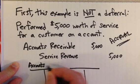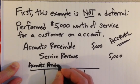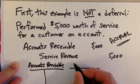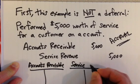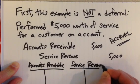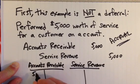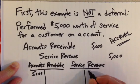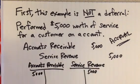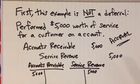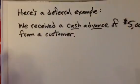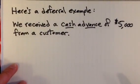And of course we can do this in T-accounts too. Here's our accounts receivable T-account and here's our service revenue T-account. To record the accrual, we debit the $5,000 to accounts receivable and credit the $5,000 to service revenue, respectively.